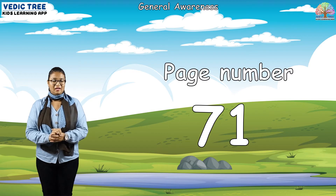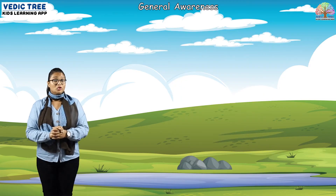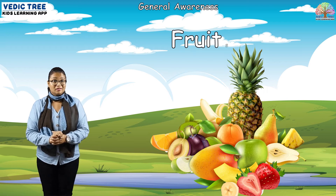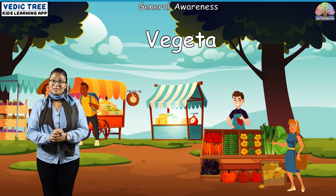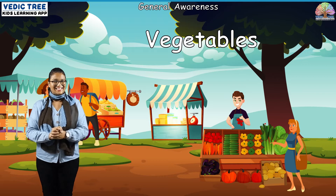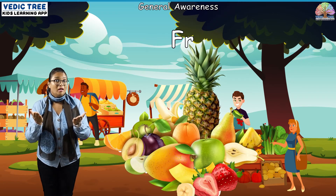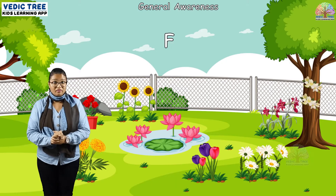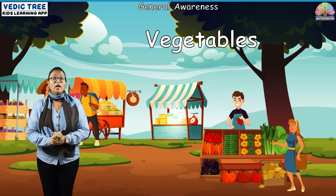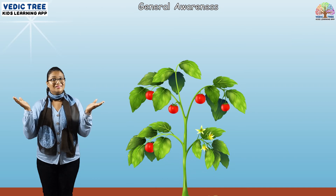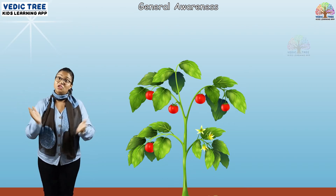Now children, we have learnt about fruits, flowers and vegetables. Where do they grow? Fruits, flowers and vegetables grow on plants — some grow on plants and some grow on trees.